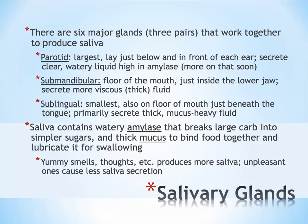The first is called the parotid, and there are actually two parotids. They are the largest of the three gland types. The parotid glands lay just below and in front of each ear. They secrete the more watery component in saliva, and that watery component is high in a digestive enzyme called amylase, which we'll talk more about in just a minute.